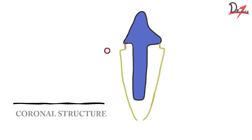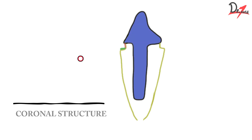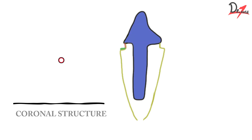Coming to coronal structure: the portion apical to the core is called the ferrule, and at least 1.5 mm of ferrule should be present all around the tooth. Non-metal posts such as the carbon fiber post are used when ample coronal dentine is present. If there is severe tooth loss or moderate tooth flaws and not enough tooth structure, we can use a cast post and core.